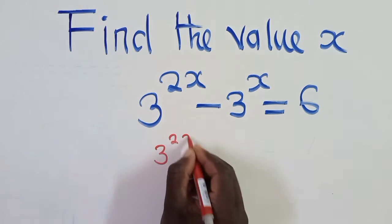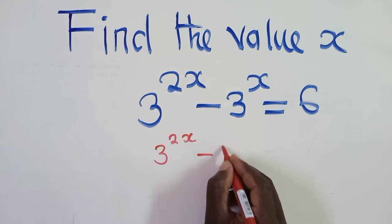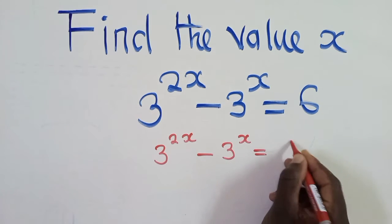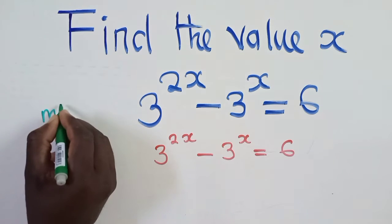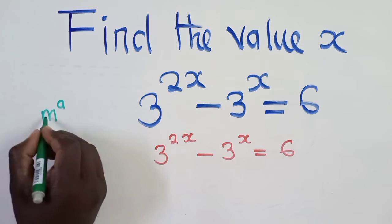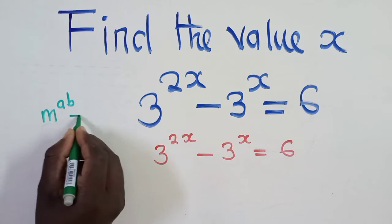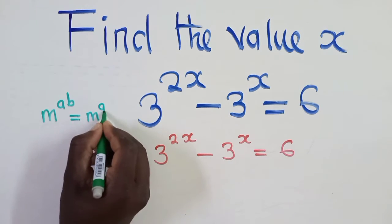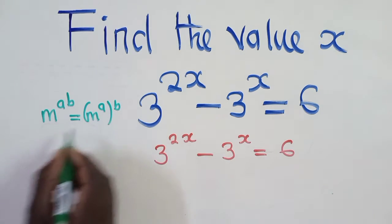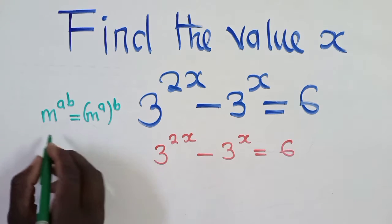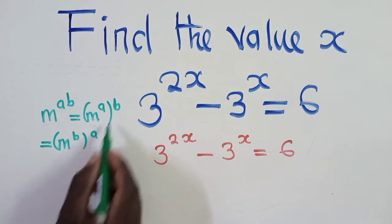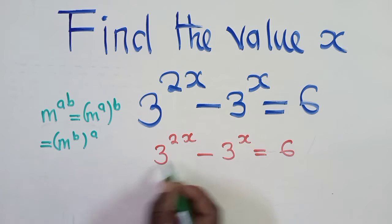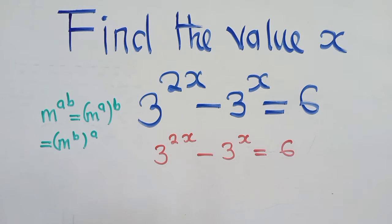We first copy it the way it looks. After copying, we apply the laws of indices. So let me show you something here: if you have m to the power a, times m to the power b, this is the same as m to the power a+b. You can also write it as m to the power b+a.